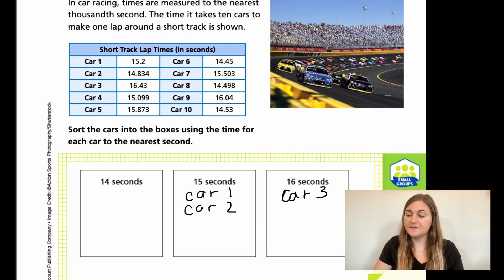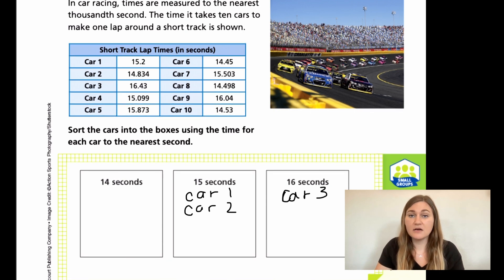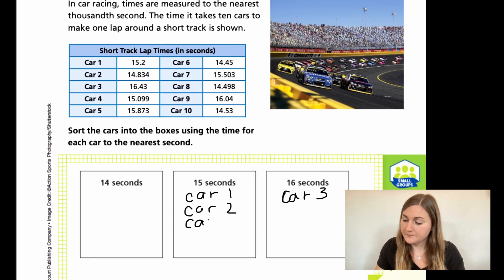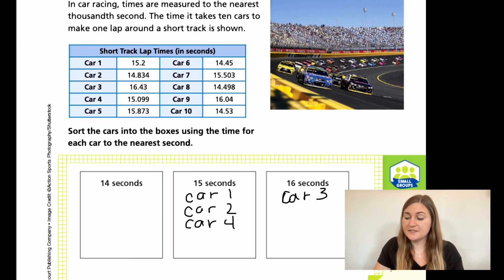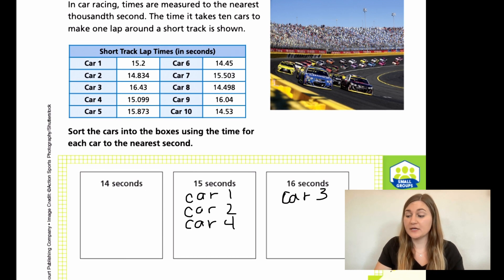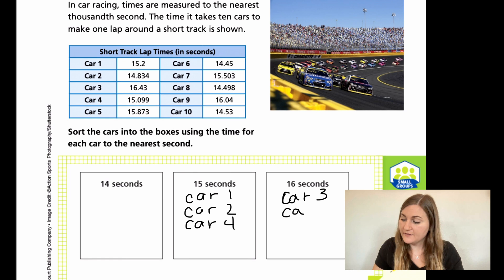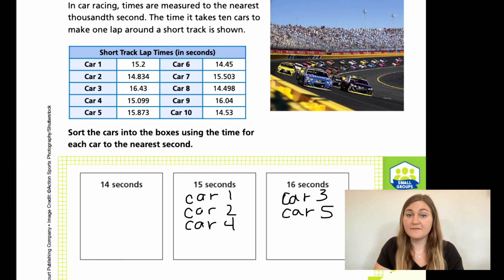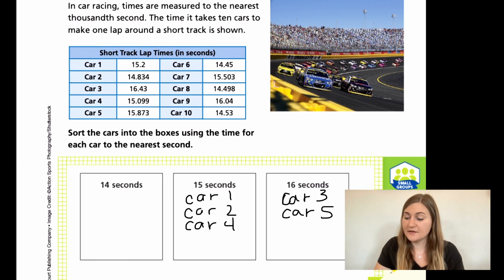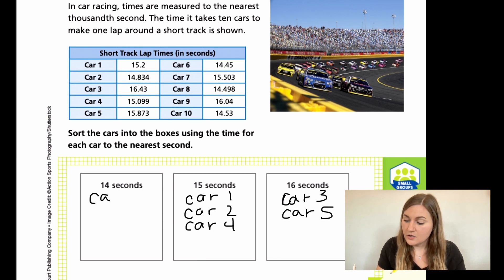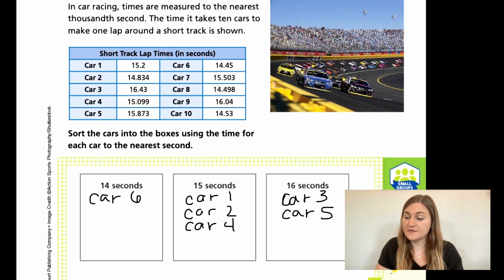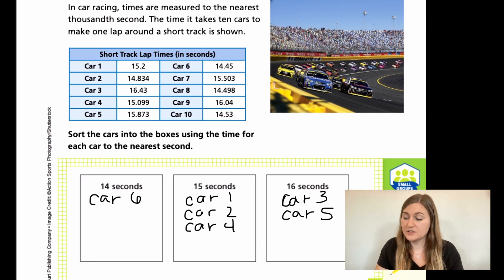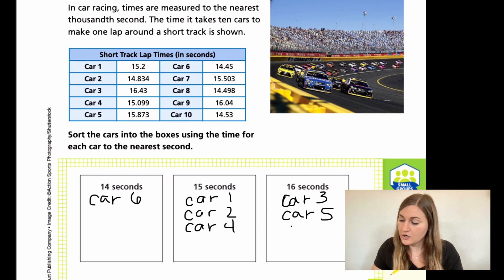Car four says 15.099. Looking at the 0, we know that we're just going to stay at 15. So we're going to put car four here. Car five is 15.8. The 8 is high enough to bring us up to 16. So car five going in 16. Car six is 14.4. Four is less than five, so it's going to keep us at that 14 second mark. Car seven is 15.5. Remember, it's five or higher. So we did meet that five, so that does bump us up into the 16 second mark.